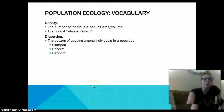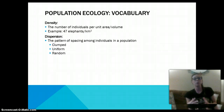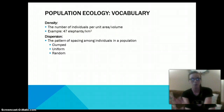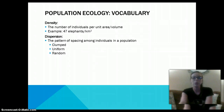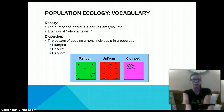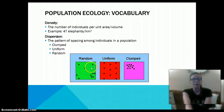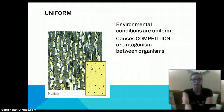Some key words that you need to know would be density and dispersion. Density is going to be the number of individuals per unit area or volume. So the example we have is there are 47 elements living in a kilometer squared. Dispersion is going to be the spacing among individuals within a population. So we have clumped, uniform, and random, and we'll talk about each one individually.